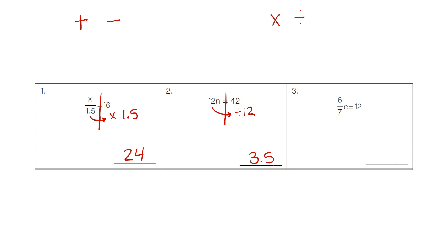For number 3, you can see that the 6/7ths fraction is on the left and the 12 is on the right. We're going to do the opposite — instead of multiplying, we divide by the fraction. Typing in the calculator, 12 divided by 6/7ths, you should get an answer of 14.